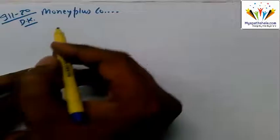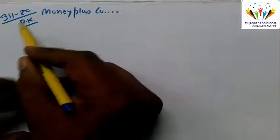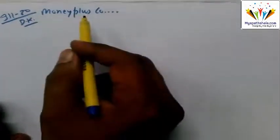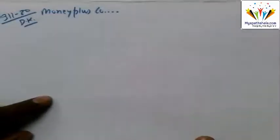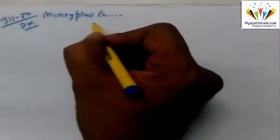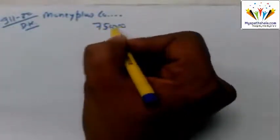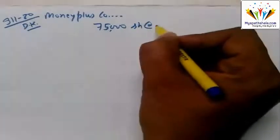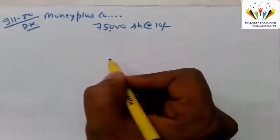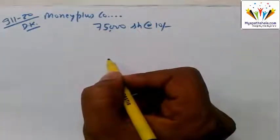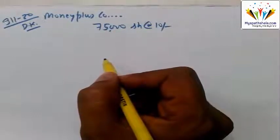The next question we are taking is illustration number 80, D.K. Money Plus Company Limited. In this question, Money Plus Company issued for public subscription 75,000 shares of face value 10, at a discount.